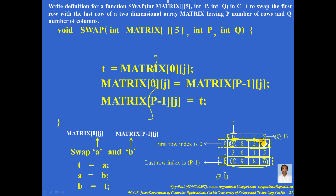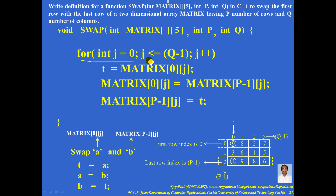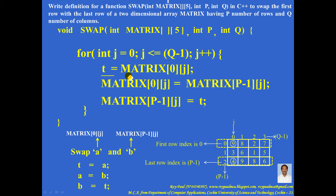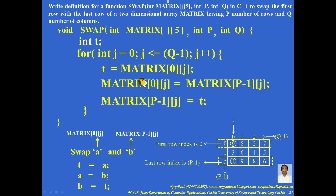Since j varies from 0 to q-1, the for loop is written as: for(j = 0; j <= q-1; j++). Since multiple statements are associated with the for loop, you need curly brackets. Note that t is one element of the two-dimensional array, which is an integer array, so t should be declared as integer. This is the complete code used for swapping the first row with the last row of a two-dimensional array.